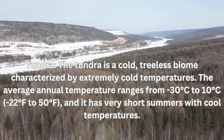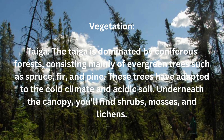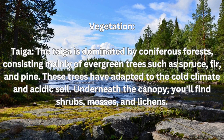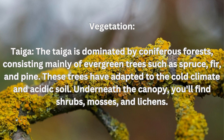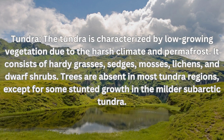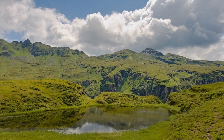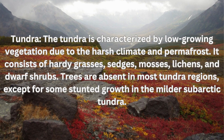Vegetation comparison: The taiga is dominated by coniferous forests consisting mainly of evergreen trees such as spruce, fir, and pine. These trees have adapted to the cold climate and acidic soil. Underneath the canopy you will find shrubs, mosses, and lichens. The tundra is characterized by low-growing vegetation due to the harsh climate and permafrost, consisting of hardy grasses, sedges, mosses, lichens, and dwarf shrubs.